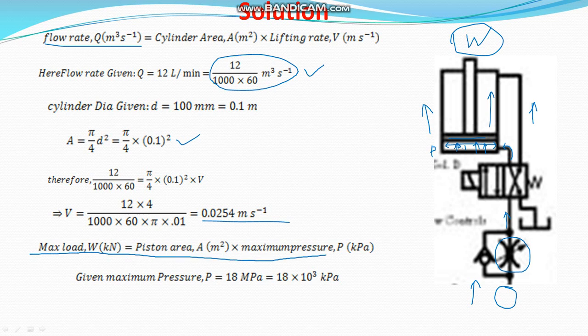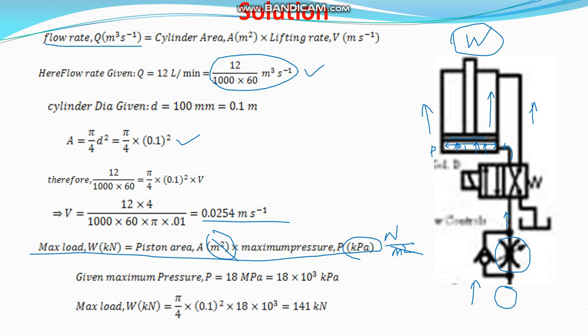Using the formula: load equals area times pressure. The area is pi by 4 into 0.1 squared, multiplied by 18 into 10 to the power 3 kilopascal. You can directly calculate this to get approximately 141.4 kilonewton. So the maximum load that can be lifted is 141.4 kN.